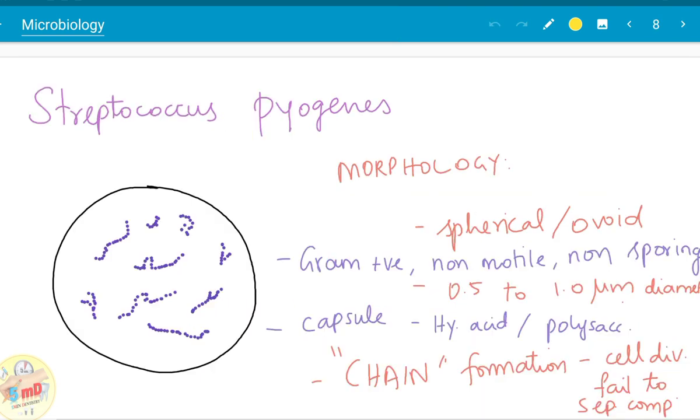Streptococcus pyogenes morphology is as follows. It is spherical or ovoid as the name cocci suggests, gram positive and non-motile, non-sporing. The diameter of the bacteria ranges from 0.5 to 1 micrometer. Capsule may be present in some strains either made of hyaluronic acid or polysaccharide.